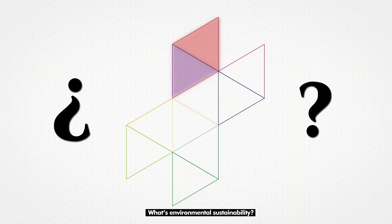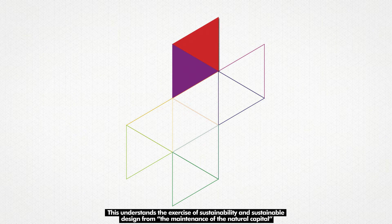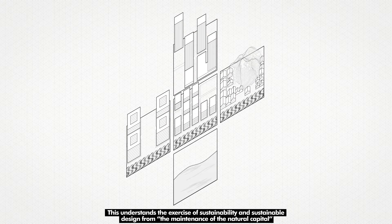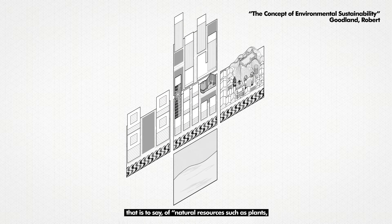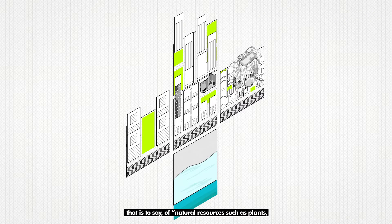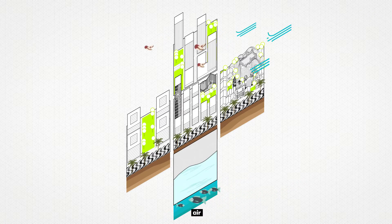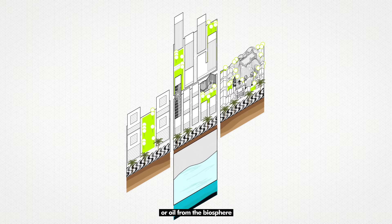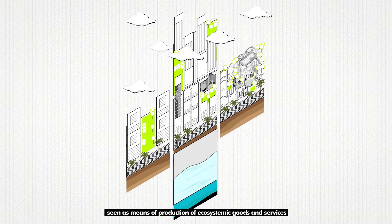What's environmental sustainability? This understands the exercise of sustainability and sustainable design from the maintenance of the natural capital — that is to say, of natural resources such as plants, minerals, animals, air, or oil from the biosphere, seen as means of production of ecosystemic goods and services.